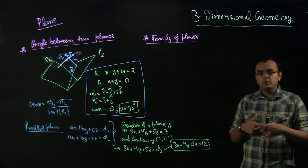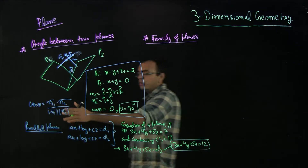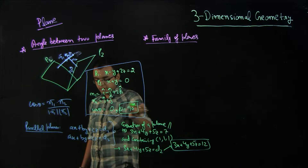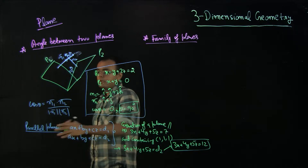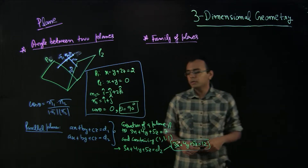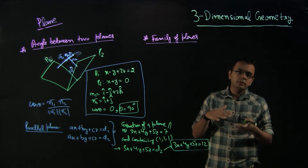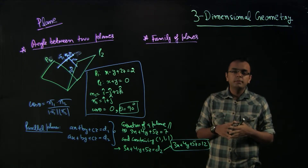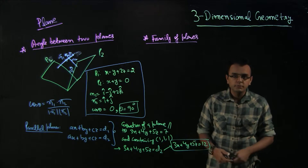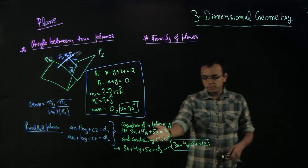If the planes are perpendicular, the dot product N1 dot N2 divided by mod N1 times mod N2 equals 0, giving 90 degrees. If they are parallel, the coefficients of the plane equations remain the same and only the constant changes.